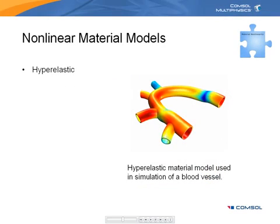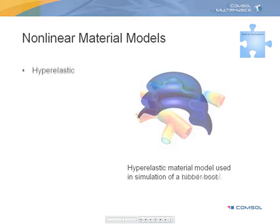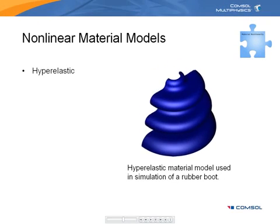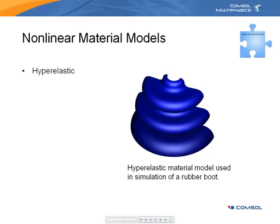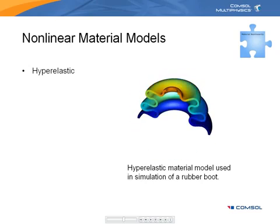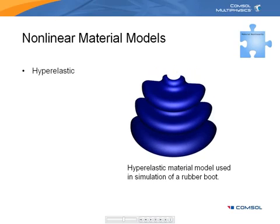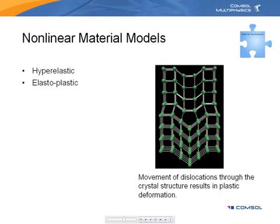Certain materials, like rubber, are elastic, but their stress-strain relationship is not linear. These materials are said to be hyper-elastic, and material models, or constitutive laws, for these materials are required to describe their behavior. Metals above their yield strength deform plastically, which means that their deformation is permanent and cannot be recovered. Elastoplastic constitutive laws deal with this behavior.